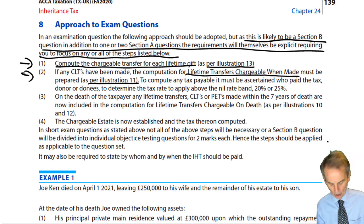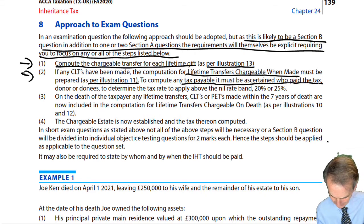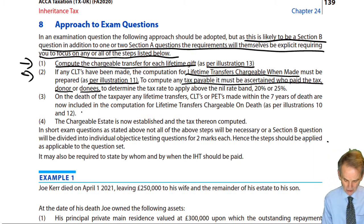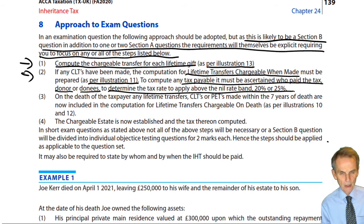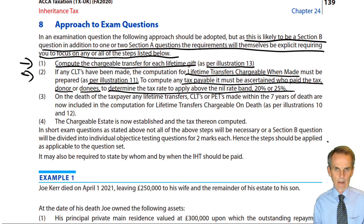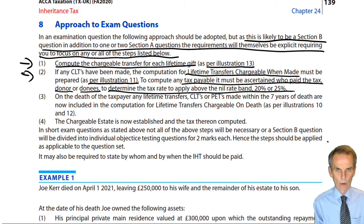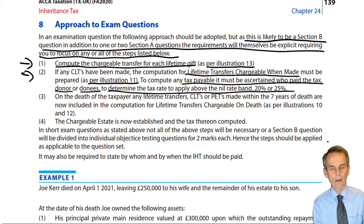Do you know how to do that computation? To compute any tax payable, you must ascertain who paid the tax — is it the donor paying the tax, or is it the donees, i.e. the trustees? Once you've established that, you may be explicitly told to determine the tax rate to apply above the nil rate band. We have the nil rate band available. Once that has been used, in relation to that CLT chargeable when made, is the amount above the nil rate band to be taxed at 20% or 25%? Are the trustees paying — therefore 20% — or is the donor paying — therefore 25%? That's the difference between a gross and net transfer.